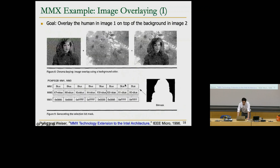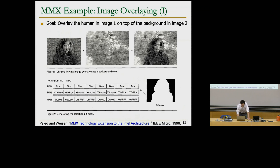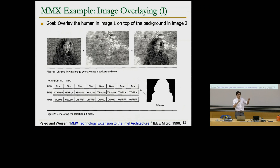Here is a real example of MMX use — described in detail in the recommended paper. The application is chroma key compositing: when you watch a weather forecast, the presenter stands in front of what looks like a map, but actually the background is a single solid color — typically blue or green. The goal is to extract the presenter's shape and overlay it onto a different background image.